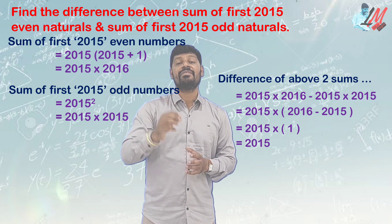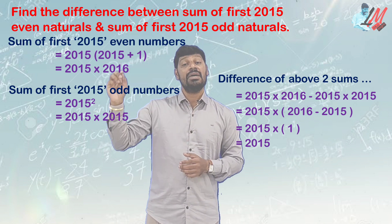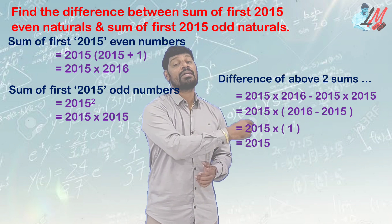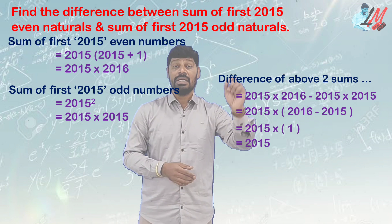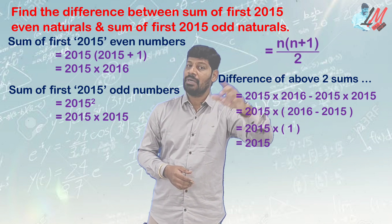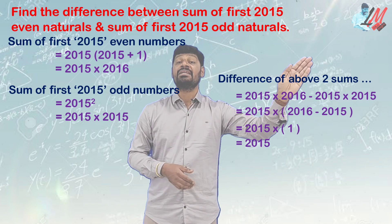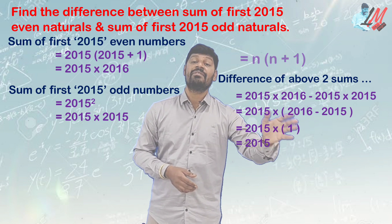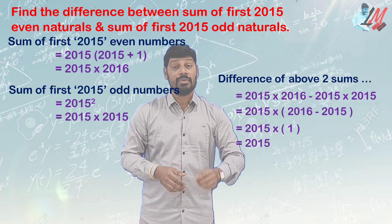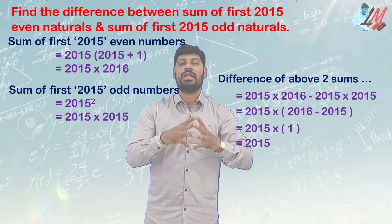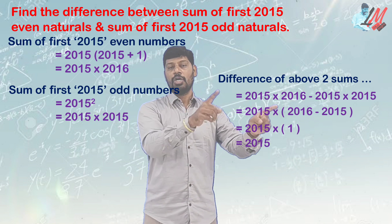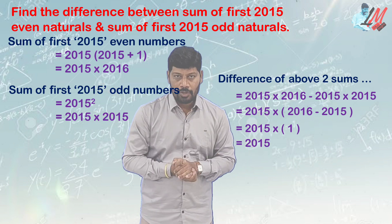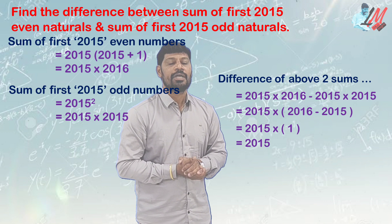Quite an interesting result! The formulas to remember: N(N+1)/2 is the sum of first N natural numbers; N² is the sum of first N odd natural numbers; N(N+1) is the sum of first N even natural numbers. These three formulas are useful not only in this problem but in many others. I hope you got it clear. Take care, bye bye.